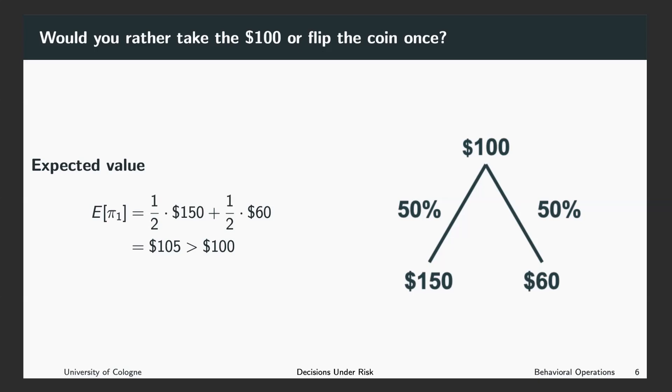What you typically do is you calculate the expected value. So 50% chance of $150 plus 50% chance of ending up with $60, which makes on average a profit or a payoff of $105, which is larger than $100. So many people would take the gamble and on average, or in expectation, this investment is paying off.